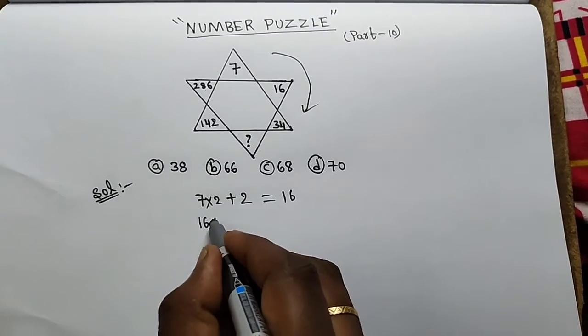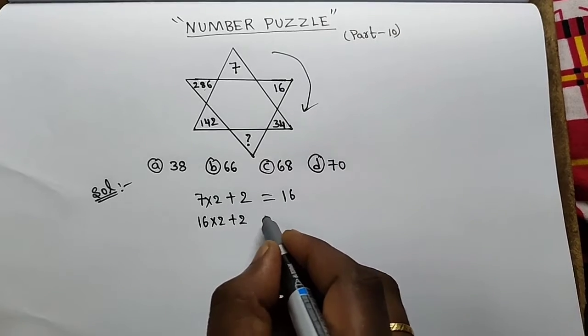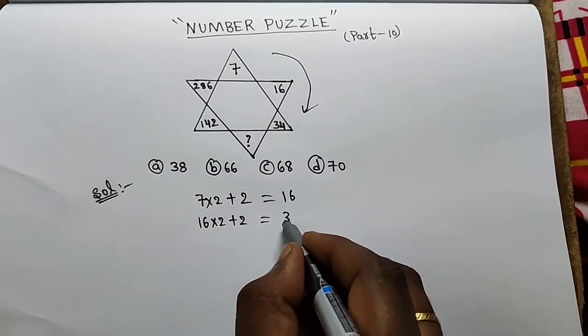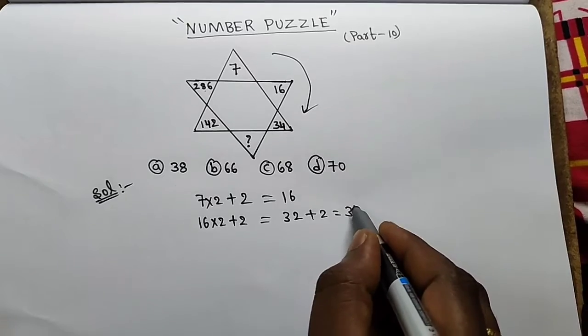Next, 16 into 2 plus 2. 16 times 2 is 32. 32 plus 2 equals 34.